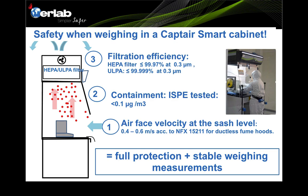This slide shows how the CaptureSmart filtered fume hood provides full protection and a stable weighing environment. At the sash opening, the face velocity is maintained within 0.4 to 0.6 meters per second according to NFX 15211 standards, and it also complies with local DOSH requirements for fume hoods. Having passed the ISPE containment test with results below 0.1 micrograms per cubic meter, the CaptureSmart is suitable for OEB 3, 4, 5, and 6 applications. Filtration options include both HEPA and ULPA filters.